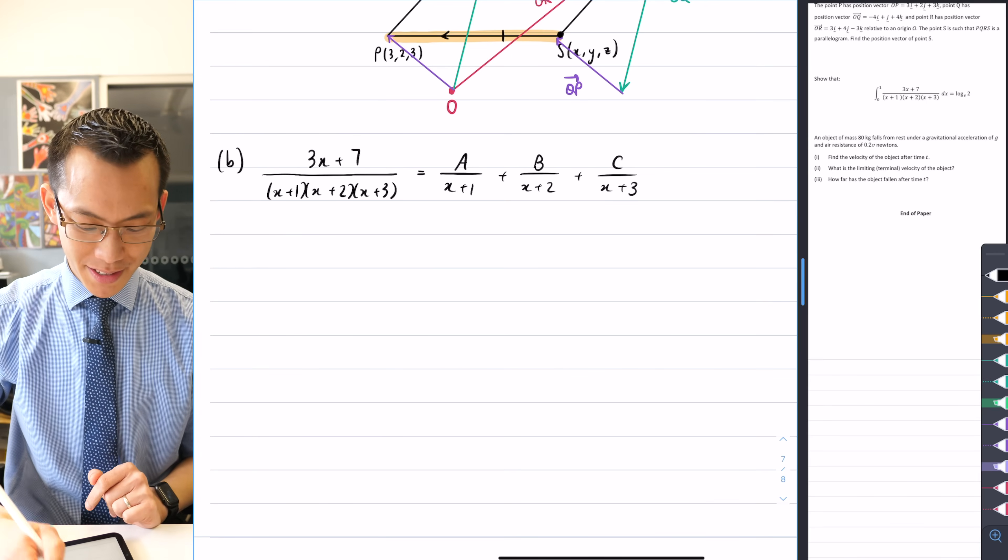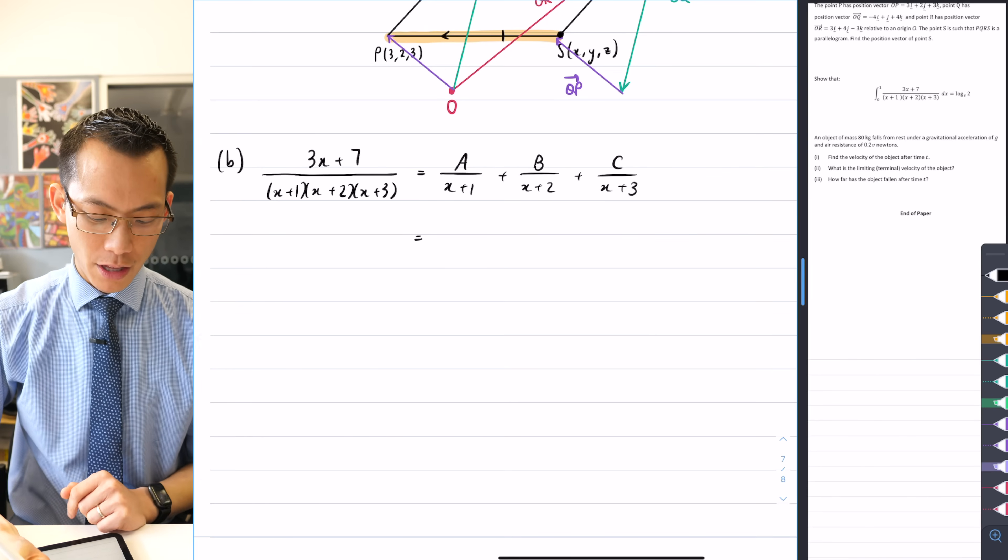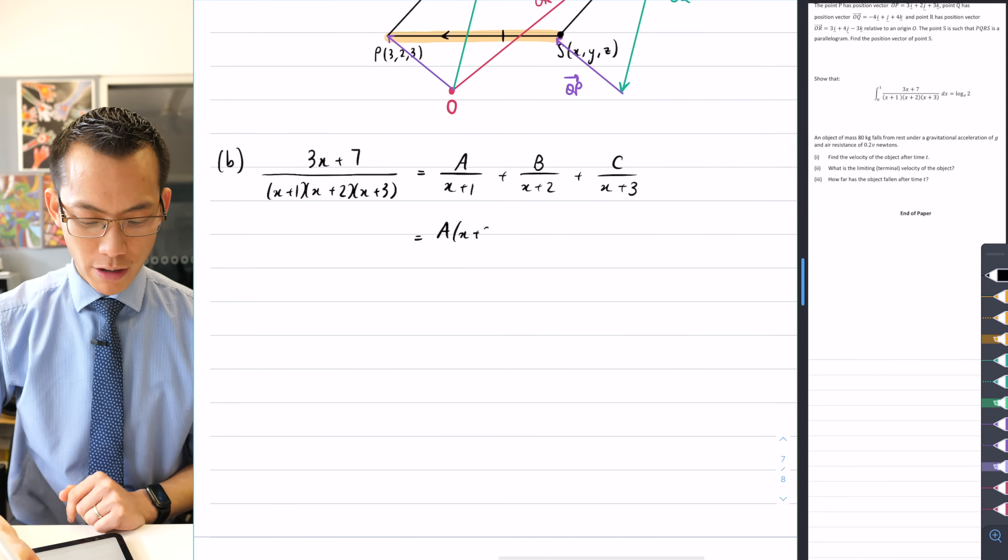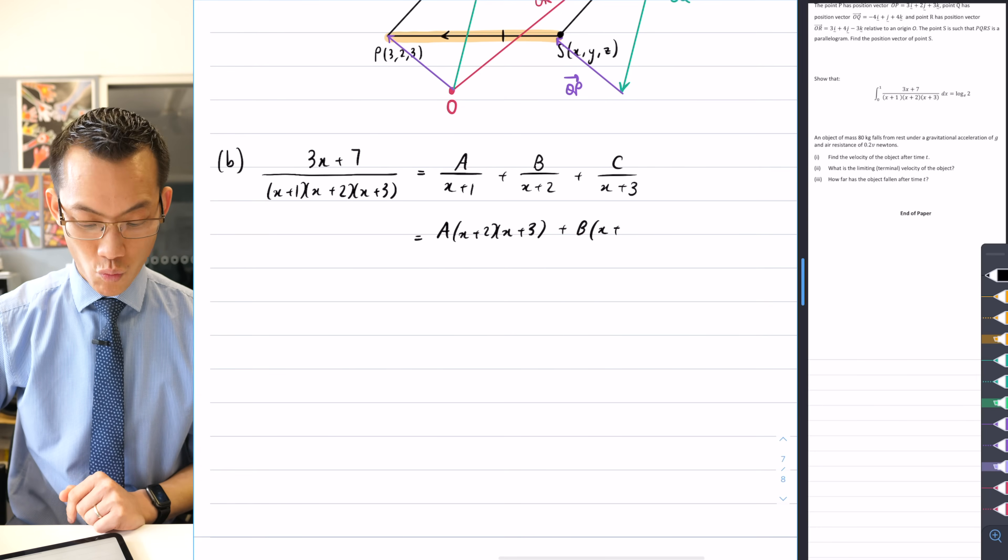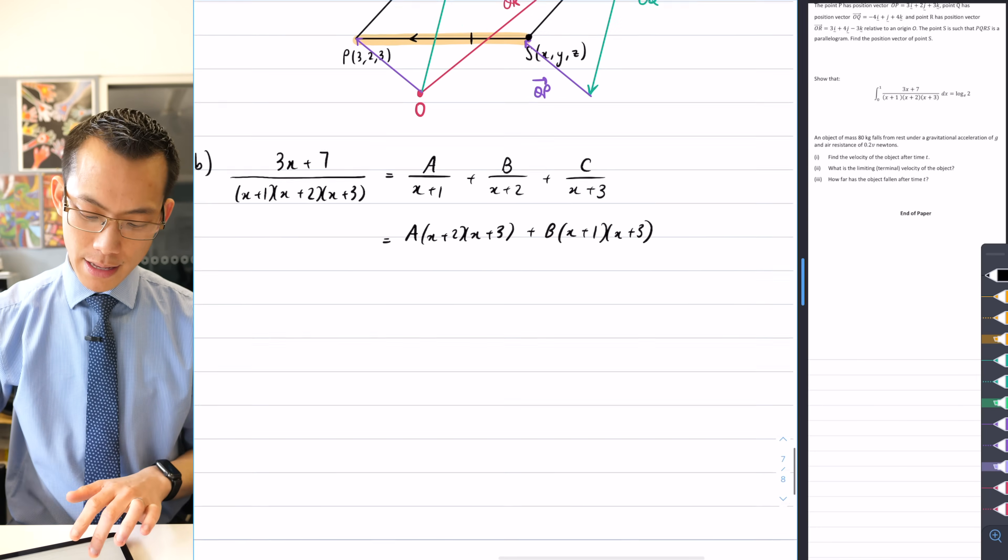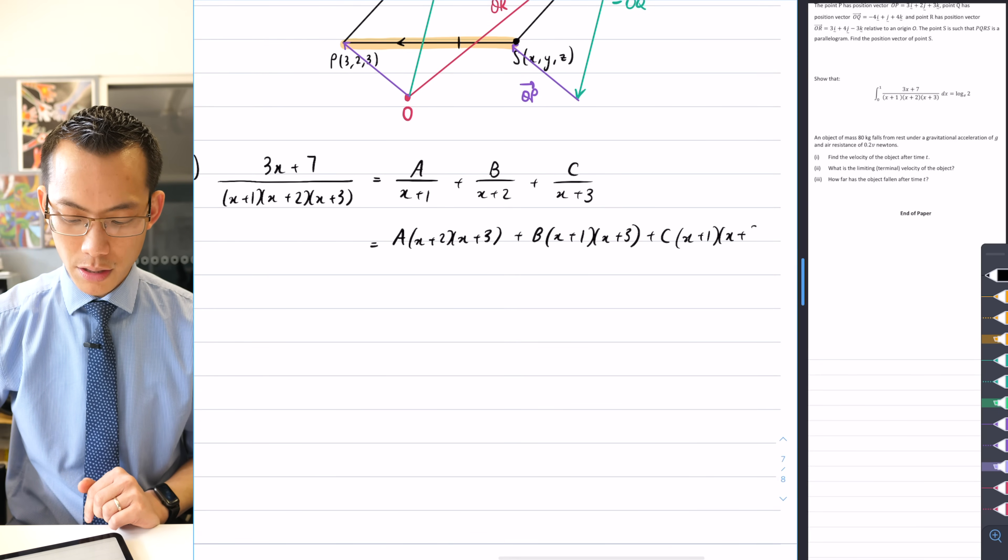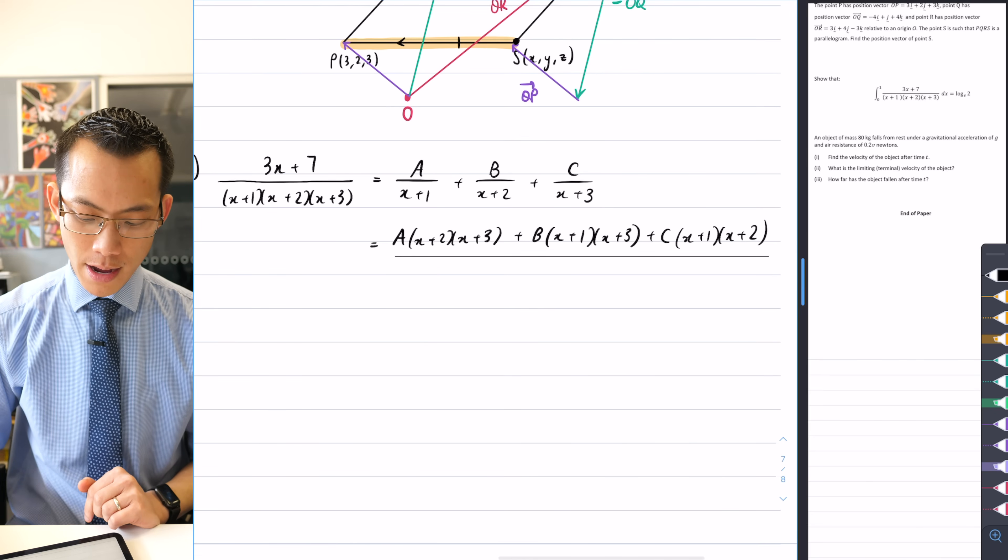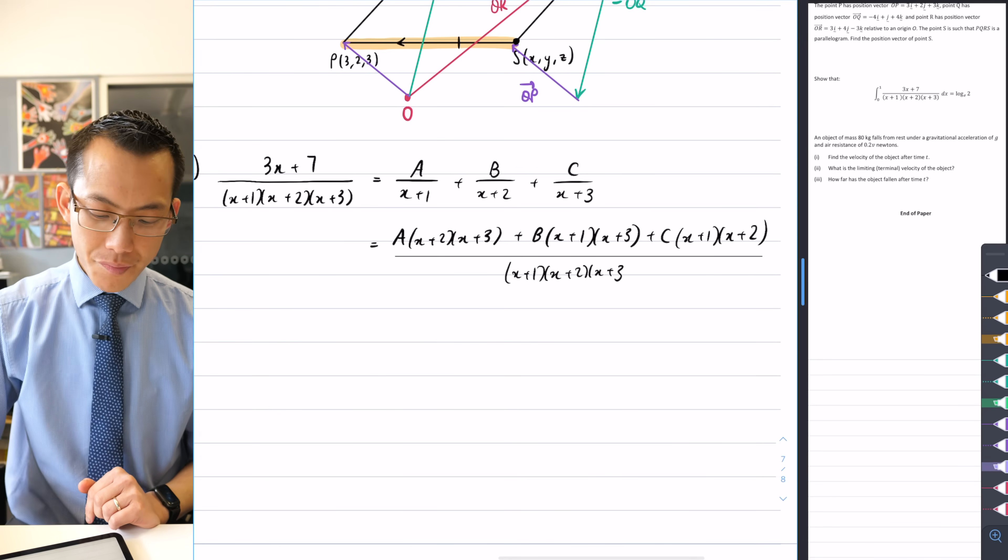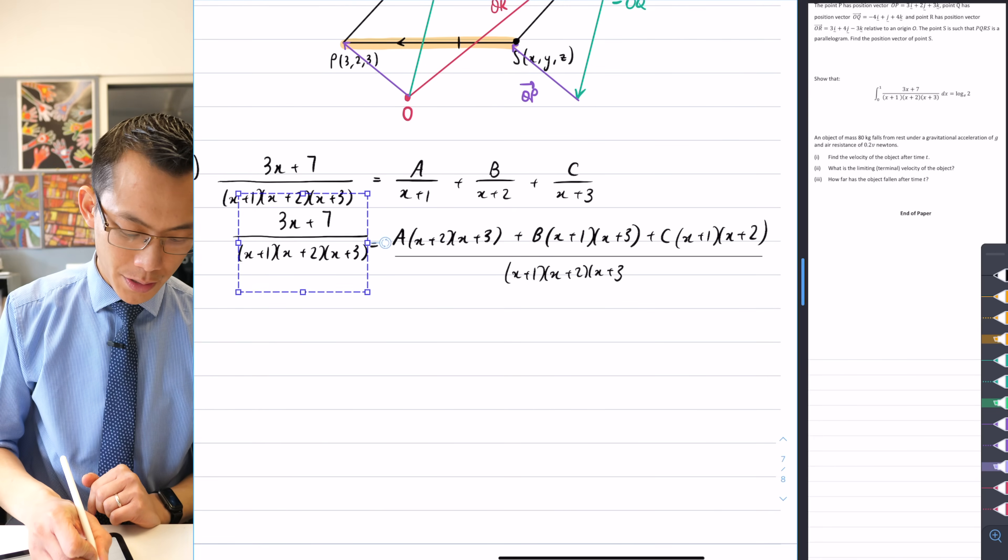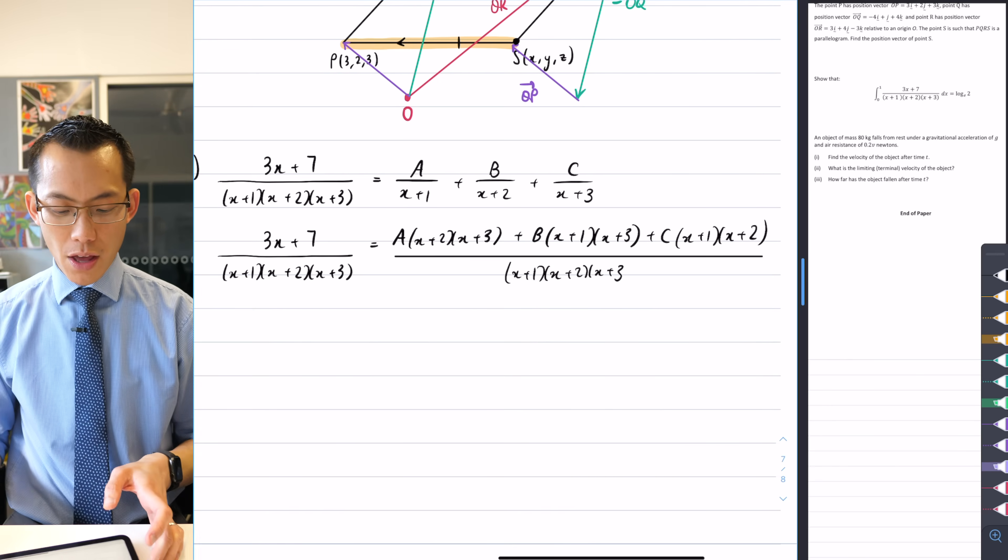Well, there is one horrendous messy looking line which is the one that combines everything together. So if you take everything on the right hand side and you mash them all together, you're going to get A times (x+2)(x+3), then you're going to get B times (x+1)(x+3), and then lastly C times (x+1)(x+2). And all of that will be divided by the original denominator that we started with on the left hand side. Now, at this point here, you had a couple of choices, and I'm going to make a case for the choice that I'm about to make.